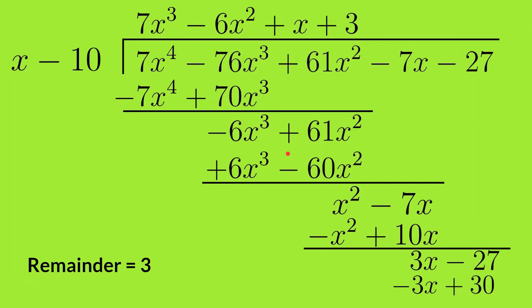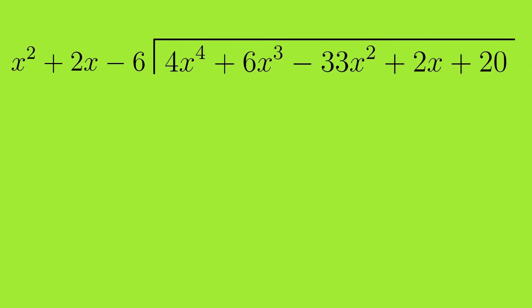Now let's look at a question where the divisor is a trinomial. We have 4x⁴ plus 6x³ minus 33x² plus 2x plus 20, all divided by x² plus 2x minus 6.